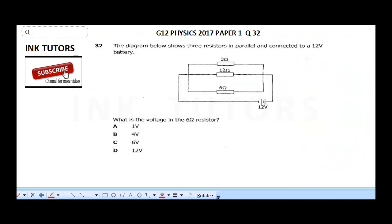The next question says, the diagram below shows two resistors in parallel and connected to a 12 volts supply. Now, these are the resistors. It says what is the voltage in the 6 ohms resistor. Now, I just want to build a foundation for you here.